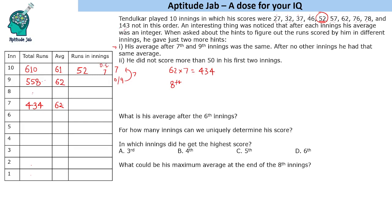In the 8th and 9th innings combined he scored 558 minus 434, which is 124. We need to find a pair of scores that add up to 124. Checking: 27, 32, 37 don't work. Clearly it is 46 and 78, since 46 plus 78 equals 124. If he scored 46 in the 8th innings his total would be 480, giving an average of 60. If he scored 78 his total would be 512, giving an average of 64.